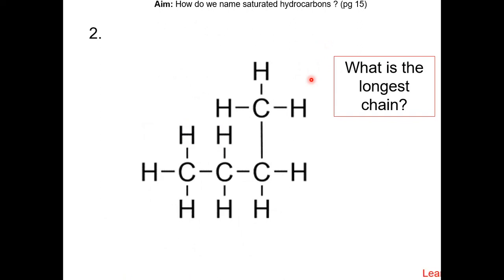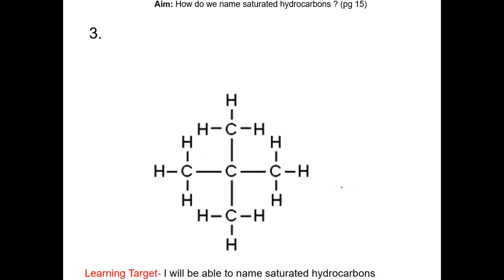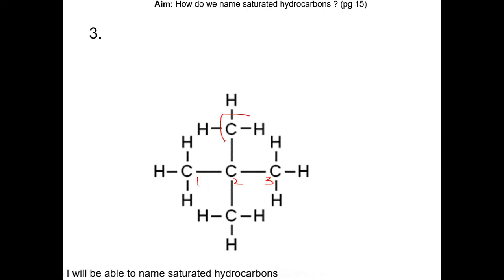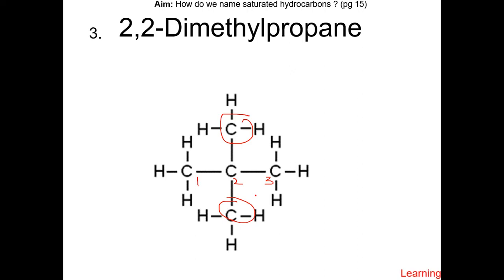For question 2, we must first identify the longest parent chain, which is 4 carbons. Since there are no substituents, the name of this hydrocarbon is butane. For question 3, the parent chain is 3 carbons long. There are two substituents — both methyl groups are on carbon 2. Therefore, the name of this compound will be 2,2-dimethylpropane.